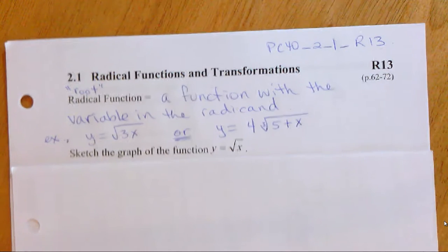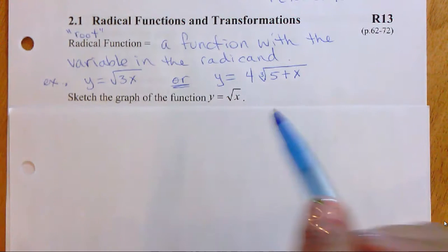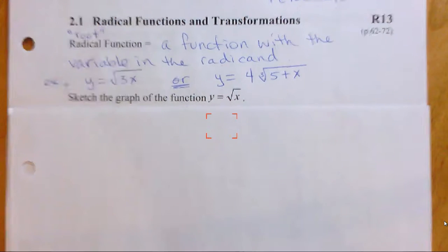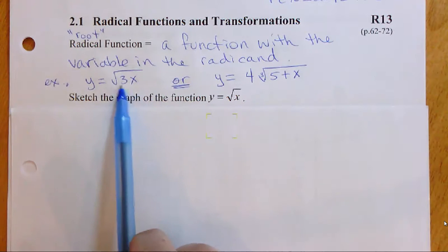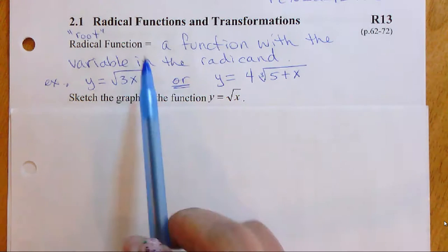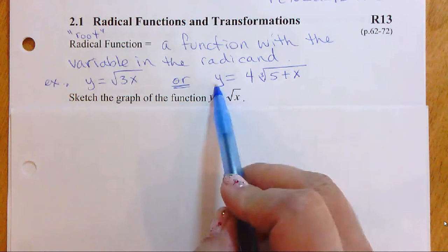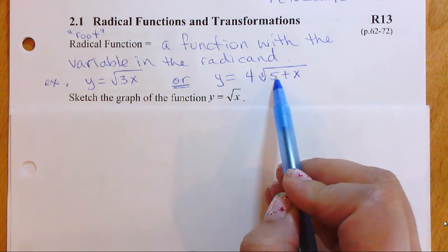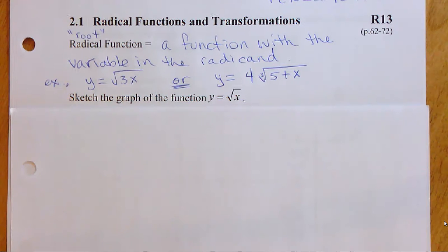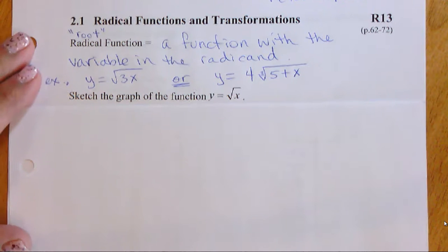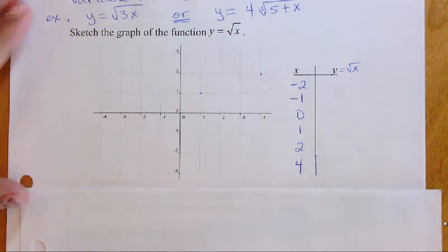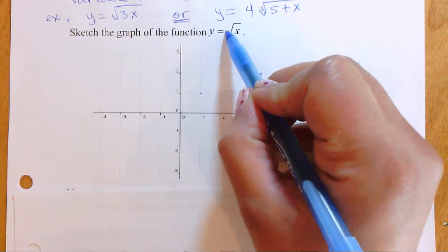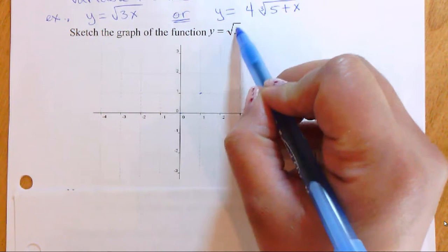We are going to look at radical functions — these are of the root variety. Things that have a square root symbol with a variable underneath, or something like y equals four times the cube root of five plus x, for instance. First we're going to introduce our parent function: y equals the square root of x.